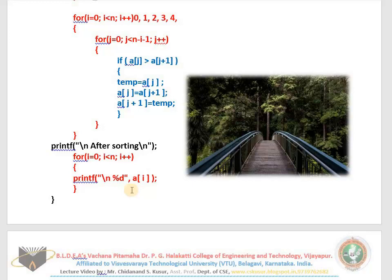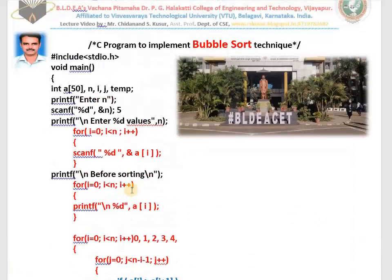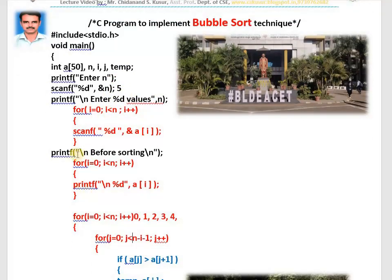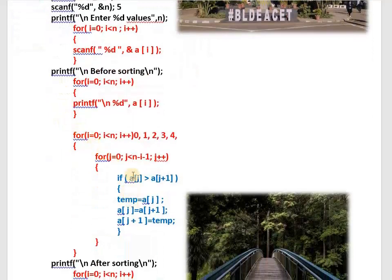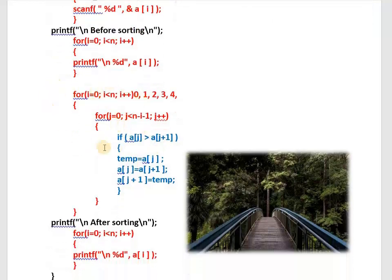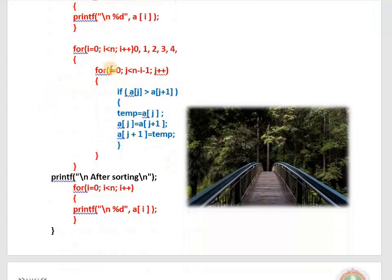If you haven't understood, watch this video slowly once again — definitely you will understand. Otherwise ask me questions, I am ready to help you. This program is really very simple: just one array of maximum size, one n variable, one i, one j, one temp. Read n, enter 5 values, store in a[0] through a[4], print values before sorting. The nested for loop with the if condition performs the sorting — outer loop works n times, inner loop works n minus i minus 1 times, every time reducing by one. After sorting, we print the values back.